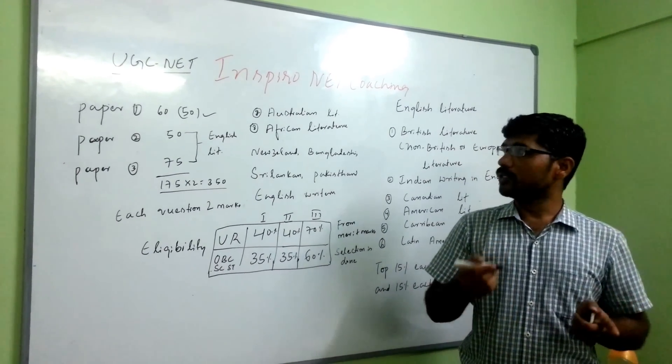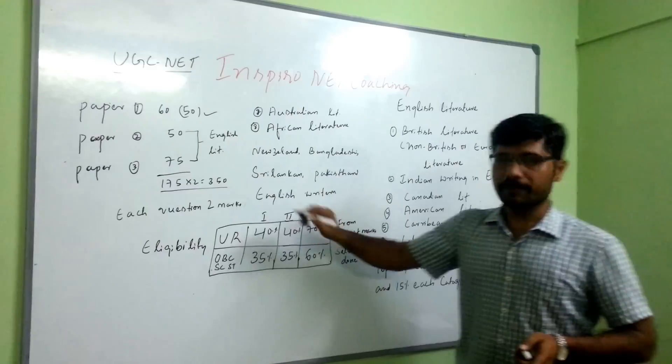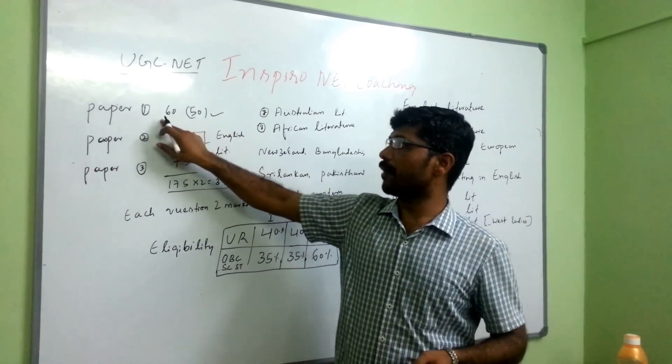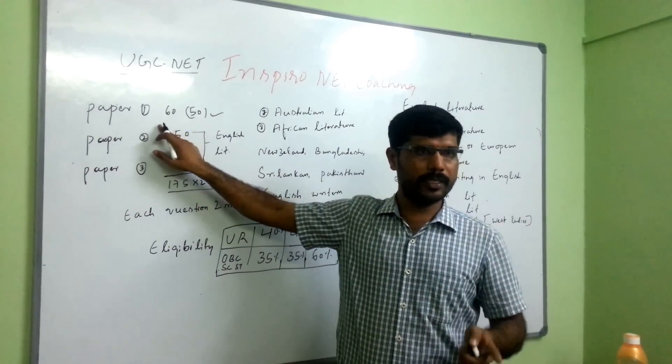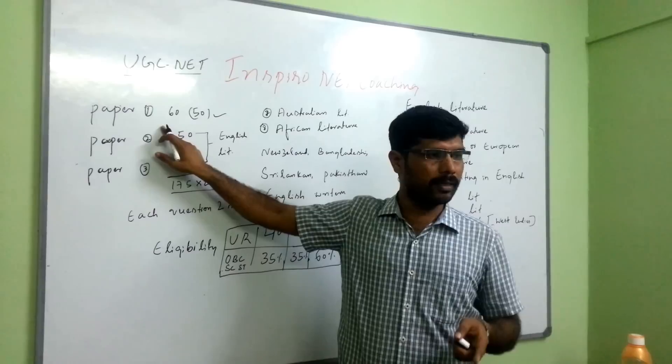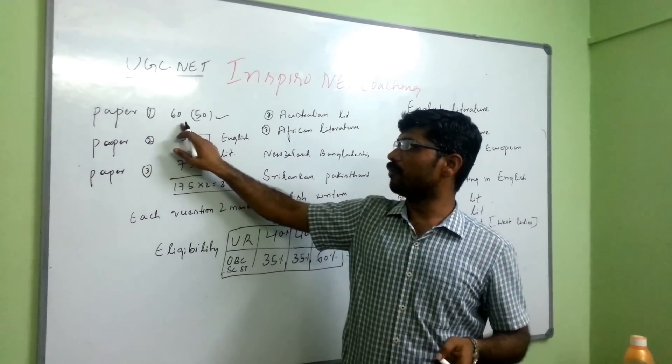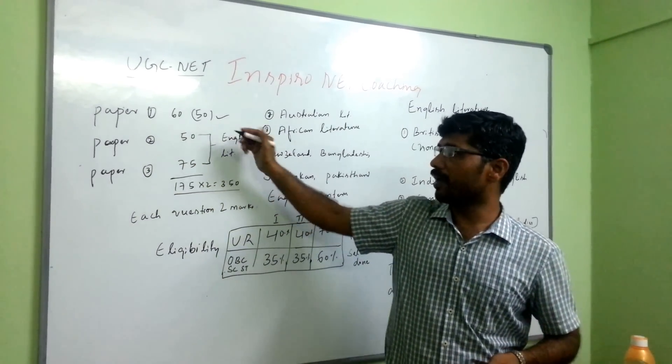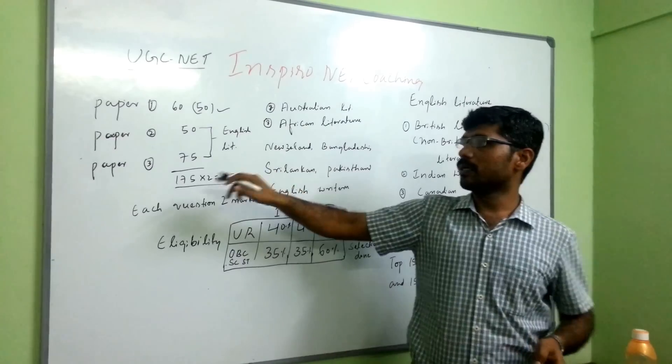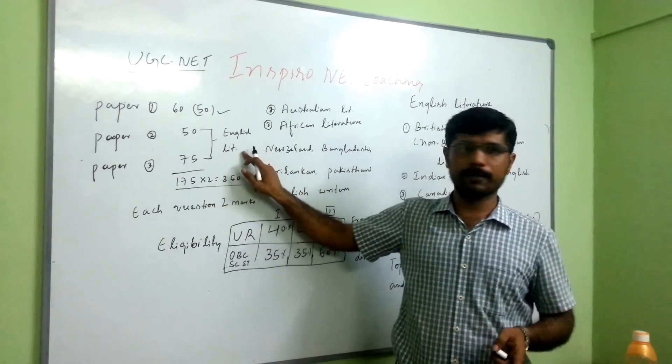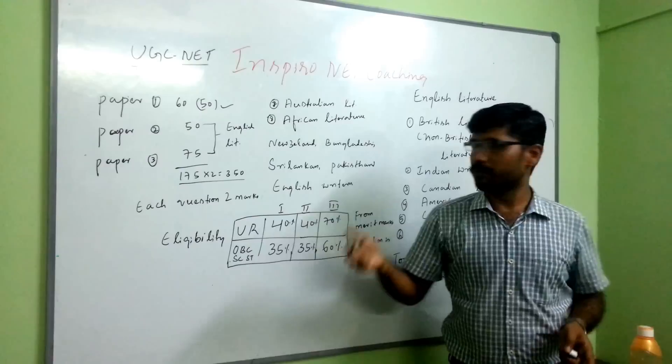In UGC NET exam, there are three papers. First one is paper one, it contains teaching aptitude and other questions, 60 questions total. In that we have to attend only 50 questions. And second and third paper of English literature, so that in our crash course we are doing here.